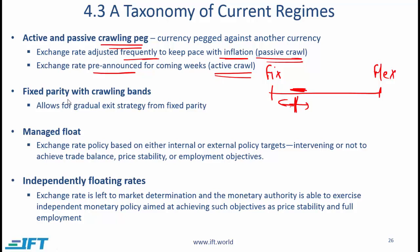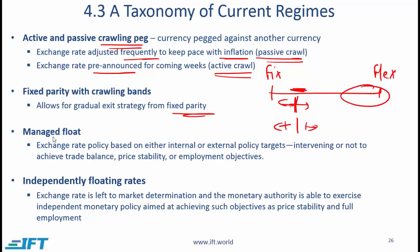The next level is fixed parity with crawling bands. In other words, we have the parity established, but the bands are flexible. This allows for a gradual exit strategy from fixed parity, and then we move closer towards the flexible system.